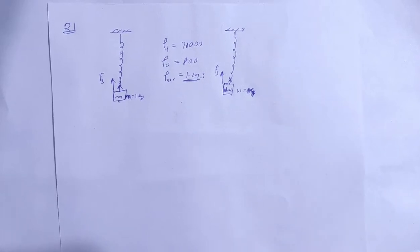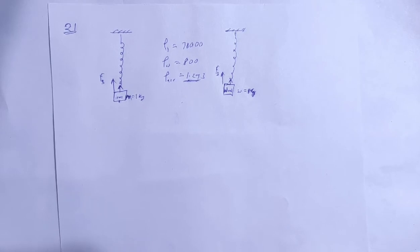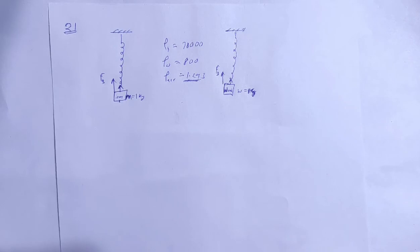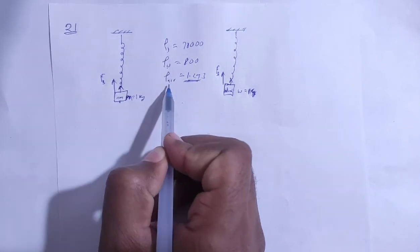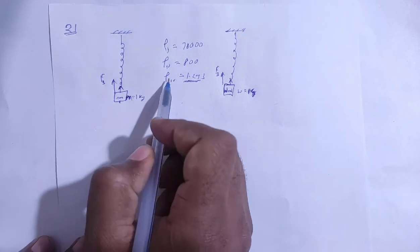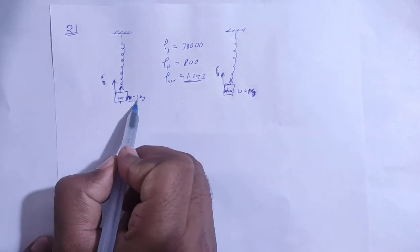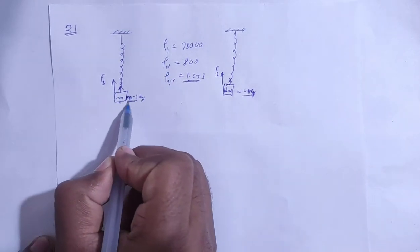HC Varma solution, Chapter 13, Fluid Mechanics, Question number 21. Find the ratio of weight as measured by spring balance of a 1 kg block of iron and 1 kg block of wood. Density of iron is 7800, density of wood is 800, and density of air is 1.293. The density of wood and iron compared with air.